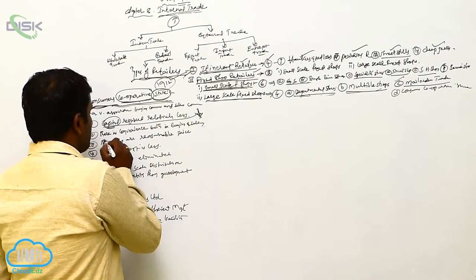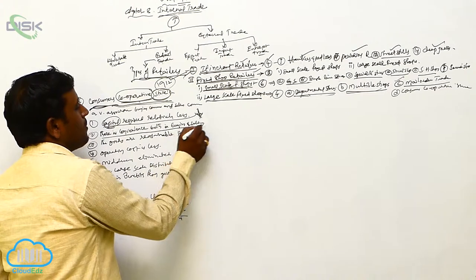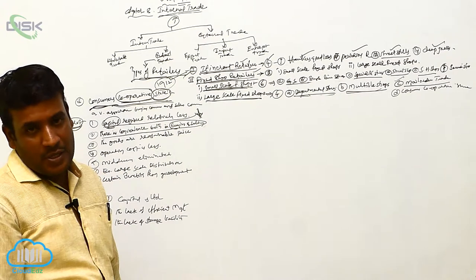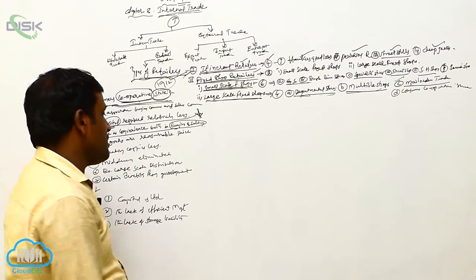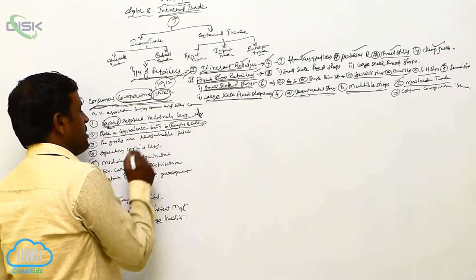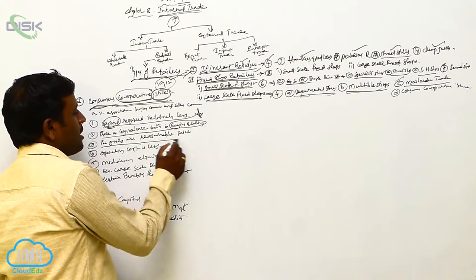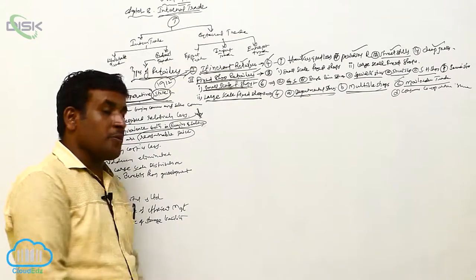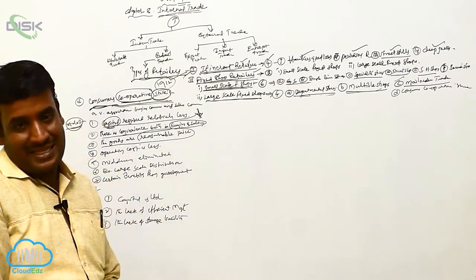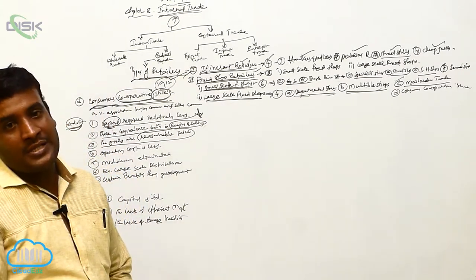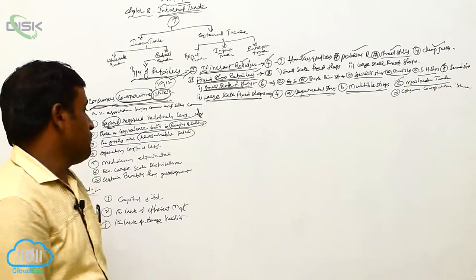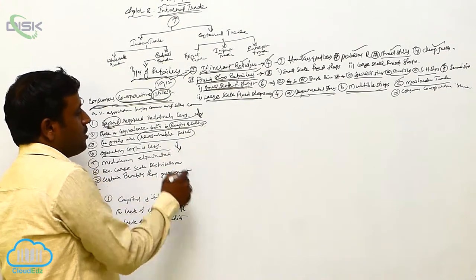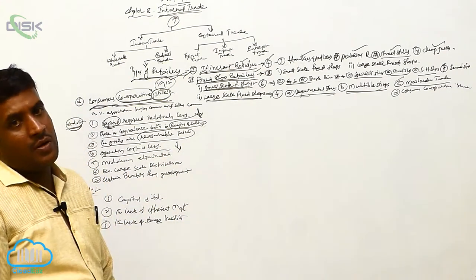The second advantage is convenience in both buying and selling, as they buy from the manufacturer and sell to their members only, making it very easy. Goods are sold at a reasonable price, not on a profit motive — the prices are comparatively lower. The operating cost is also less compared to other types.